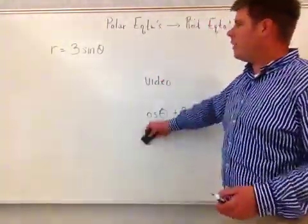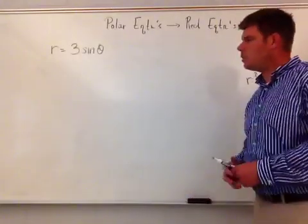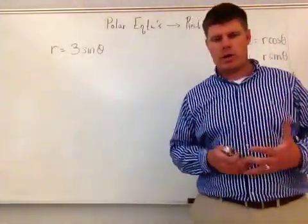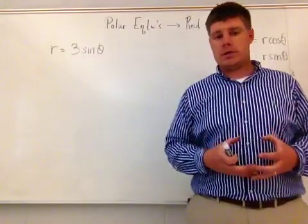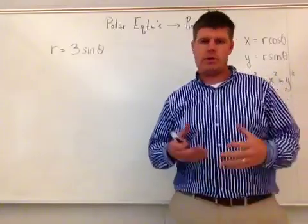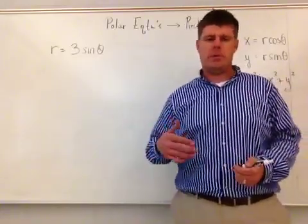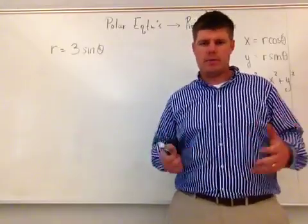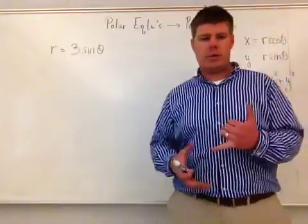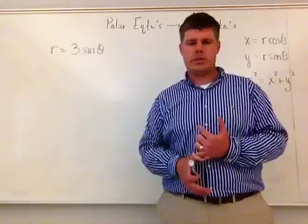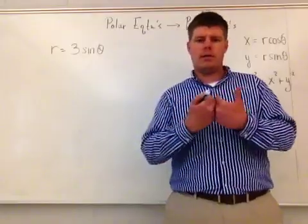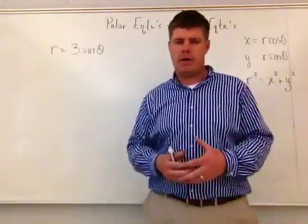Let's start off with r equals 3 sine theta. When converting from polar equations to rectangular equations, you need to know that polar equations will always have r — your radial vector — set equal to some value based on theta. In trig, we have all these trigonometric ratios that have theta in them, so we can write polar equations in terms of r and trigonometric functions that represent some value in a polar grid.